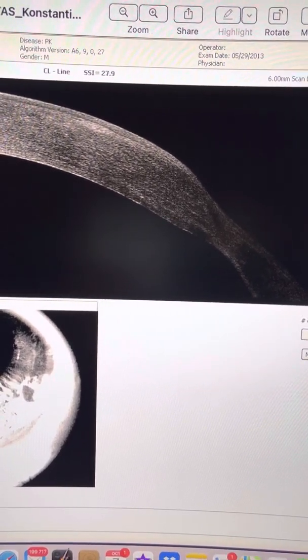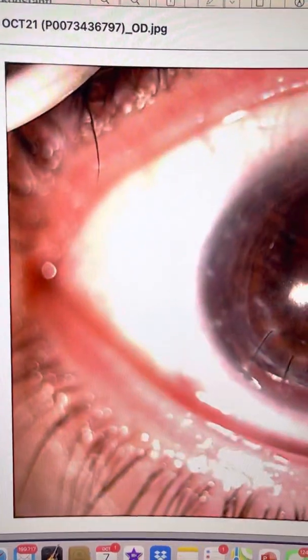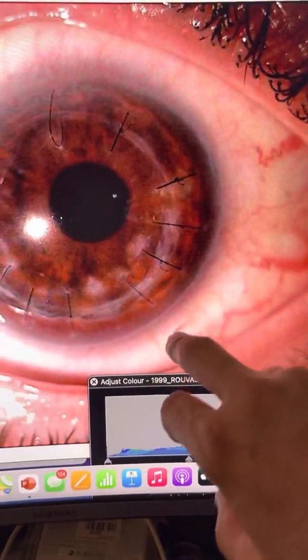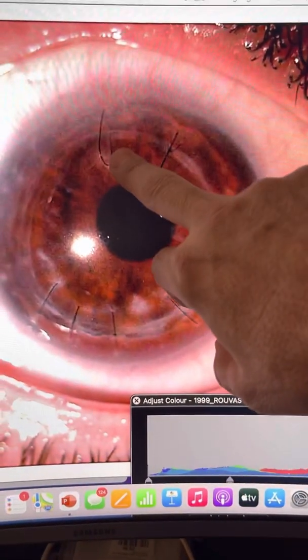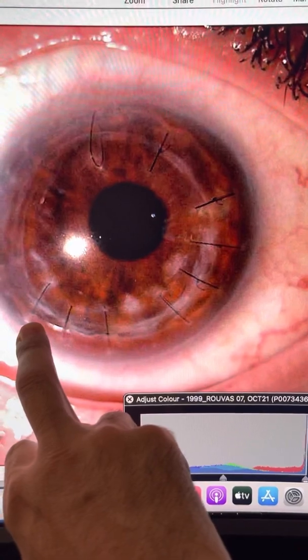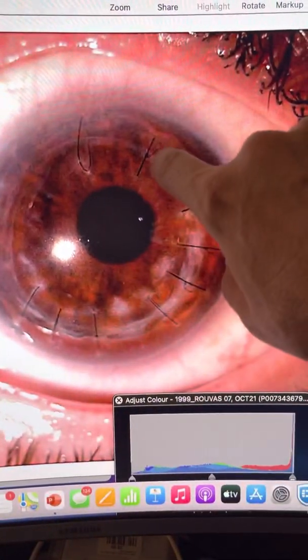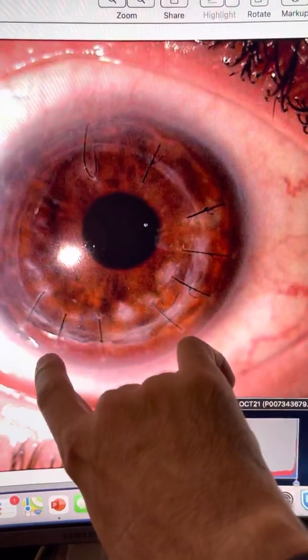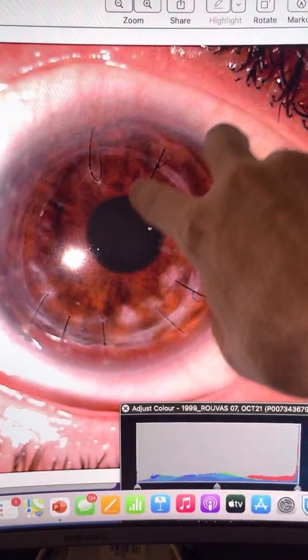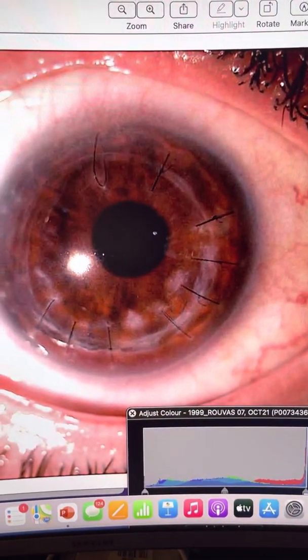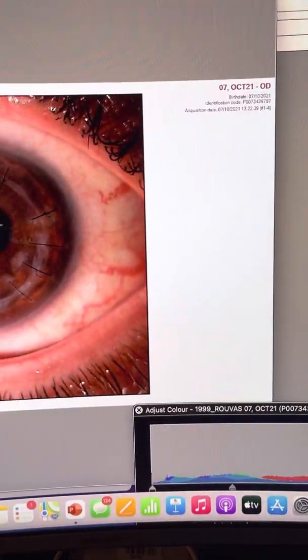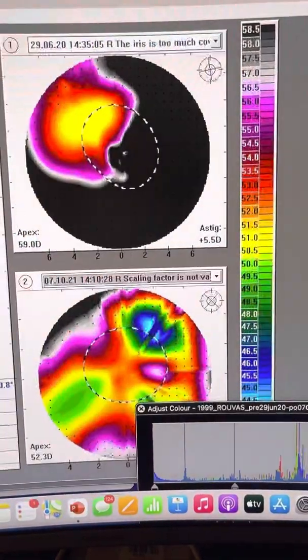So this is the cornea today. We're a year and so later. You can see that this gape does not exist anymore. Today, we took out 12 o'clock and 7:30 to 8 o'clock sutures that were loose. And then the 1 o'clock and the 7 o'clock here, because we had topographically five diopters of astigmatism, and he jumped to almost nil astigmatism into an astounding with one diopter of myopia, 20/20.